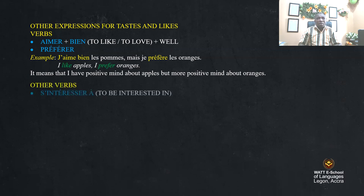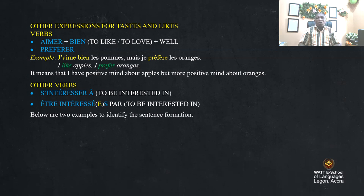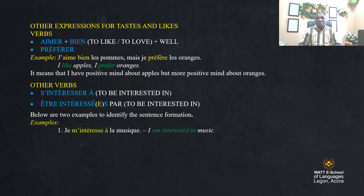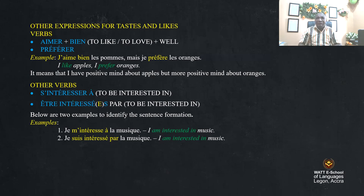Other verbs: 's'intéresser à' means to be interested in, and 'être intéressé par' also means to be interested in. For example, 'je m'intéresse à la musique' and 'je suis intéressé par la musique' both mean I am interested in music. Note the prepositions 'à' and 'par' used with 'intéressé.'